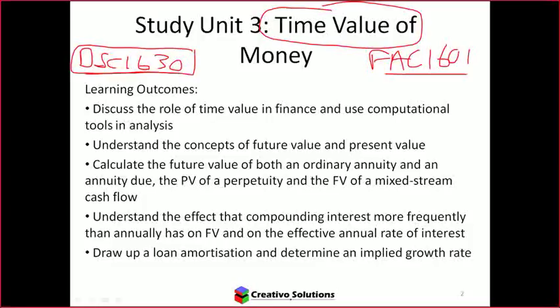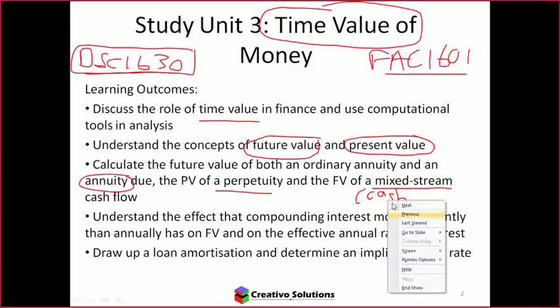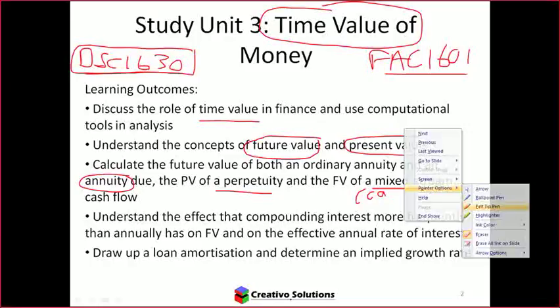When looking at this module, we'll focus on the time value of money — we need to understand what that concept is. We need to look at future value and present value, determine what a perpetuity is, look at annuities as recurring payments, and discuss a mixed stream of cash flow, which is important from a capital budgeting point of view. That's where the time value of money is applied in finance.